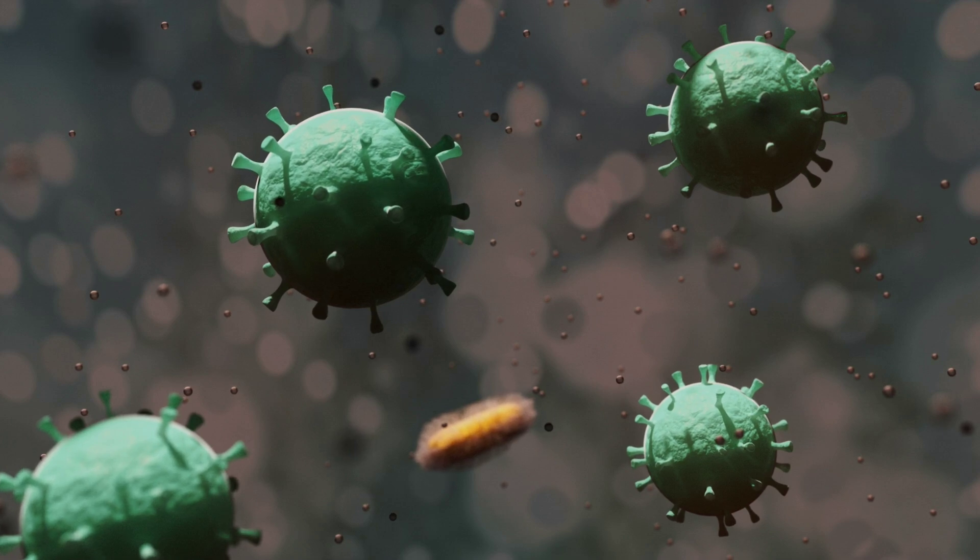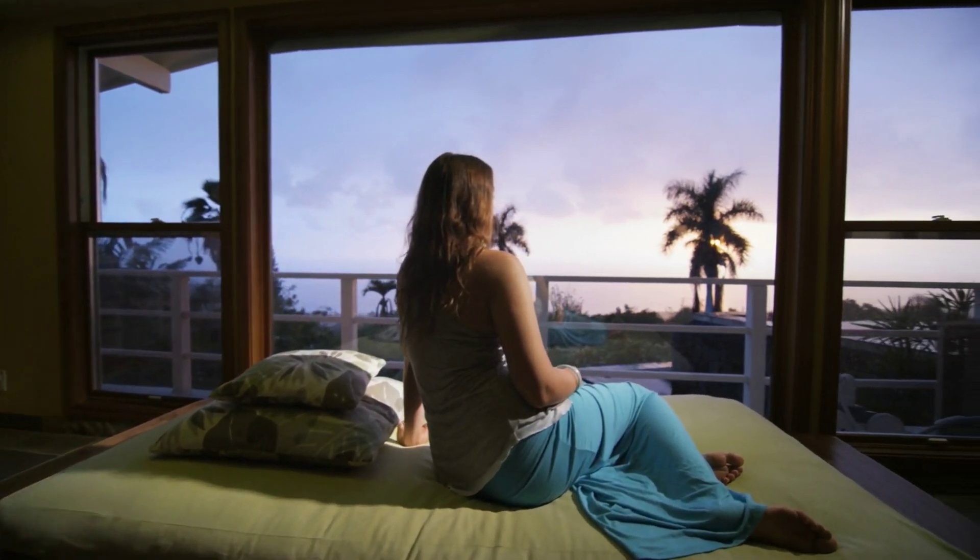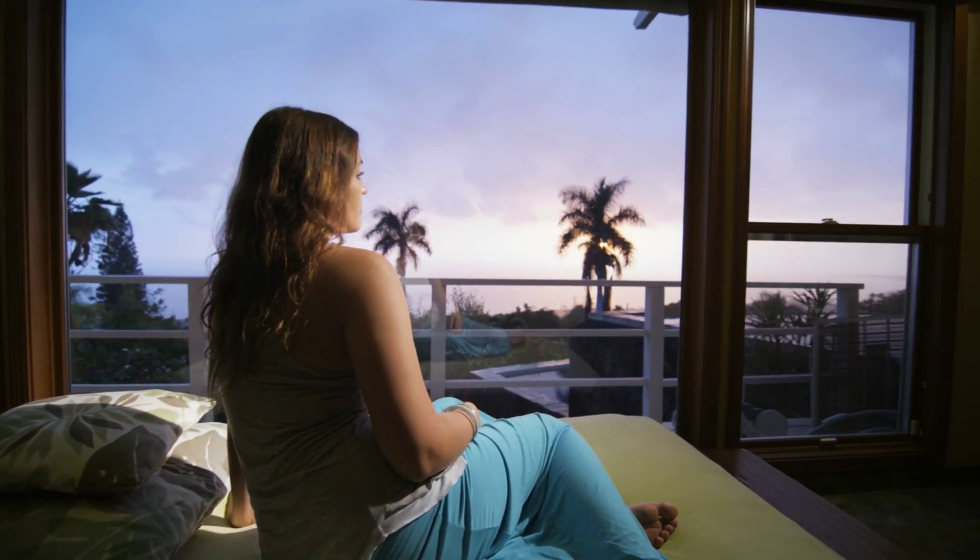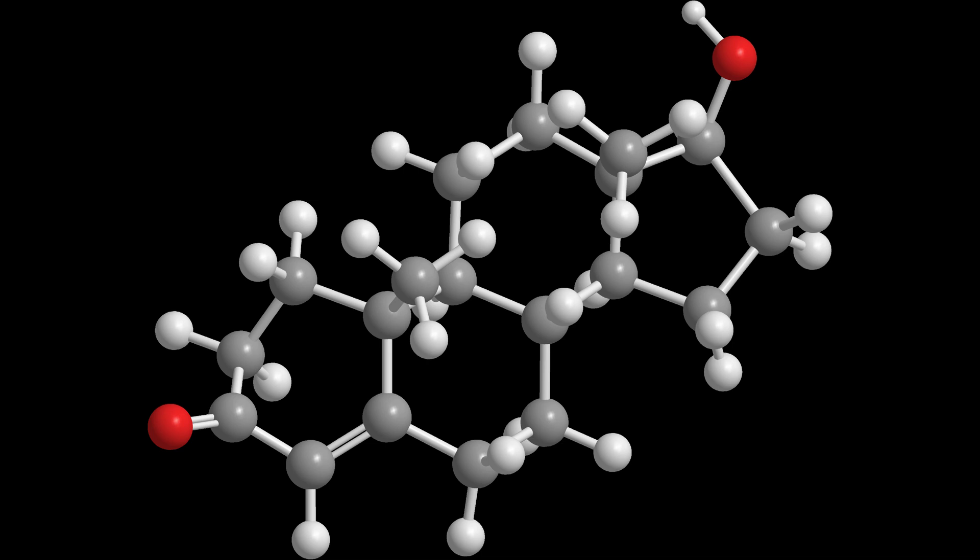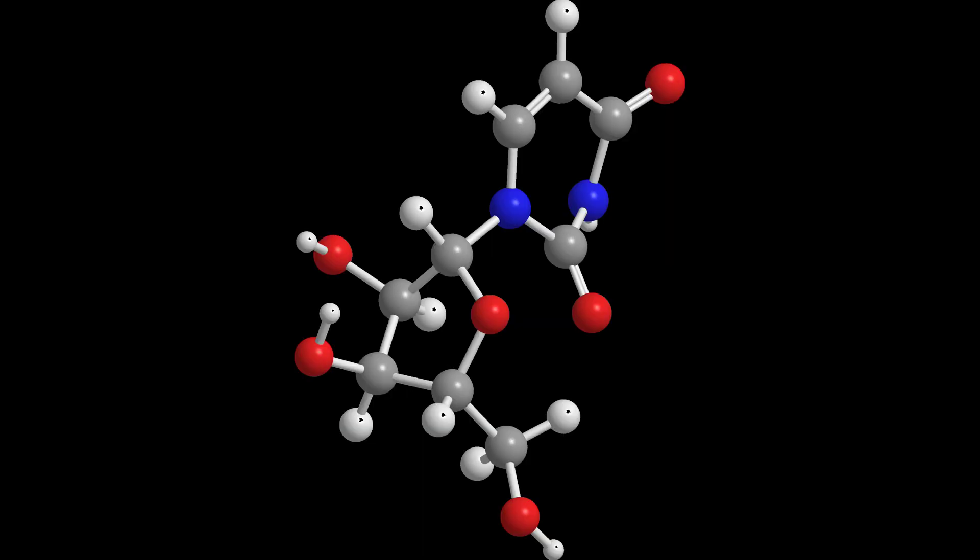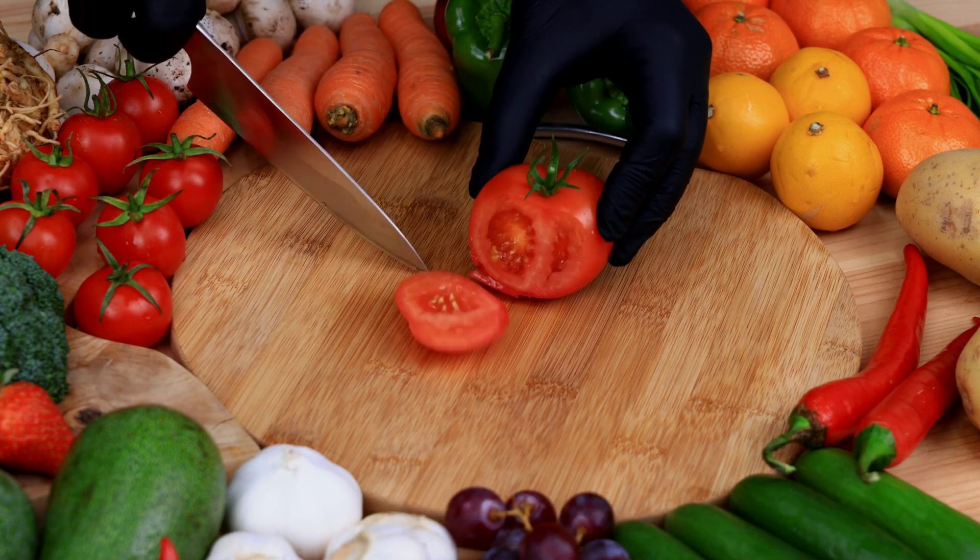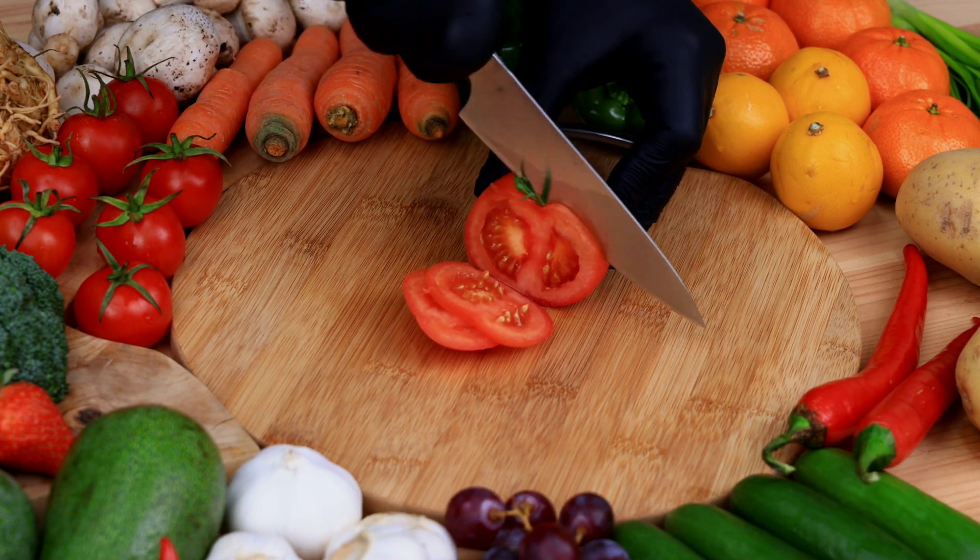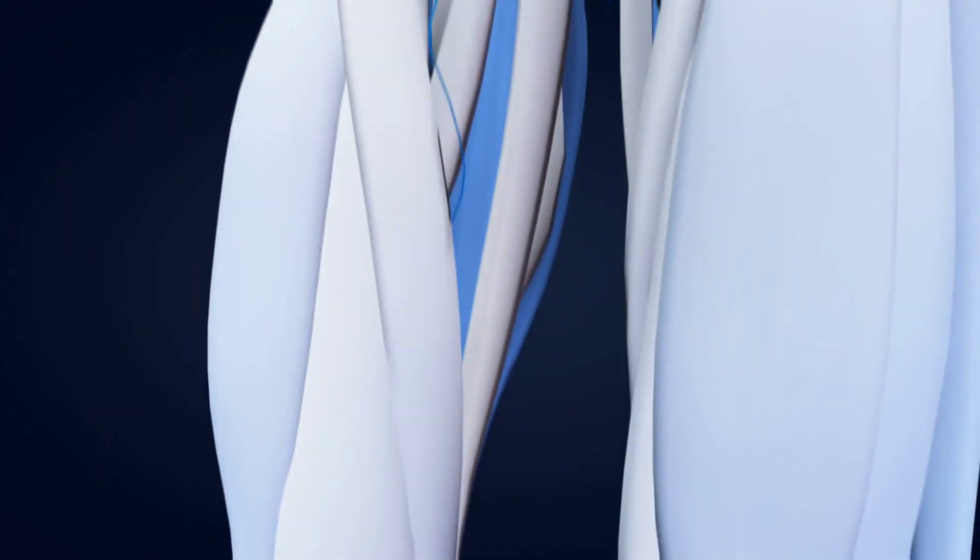From the simplest single-celled organisms to complex multicellular beings, the carbon atom is at the heart of biological processes. Carbon can form long chains, branched structures and even rings, creating an astonishing diversity of organic compounds. These compounds serve as the building blocks of life.